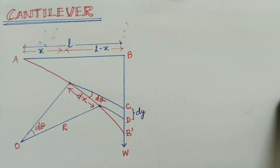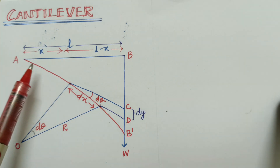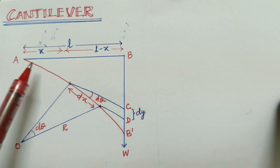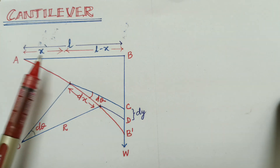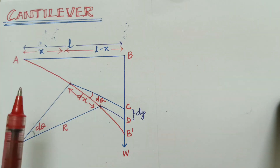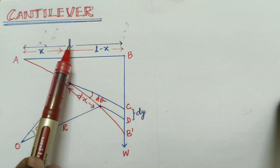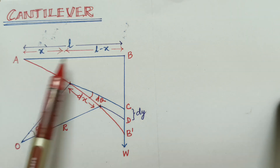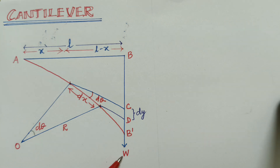Good evening. Today we are discussing about cantilever. What is meant by cantilever? The cantilever is nothing but a beam that is fixed at one end and loaded at the other end. Consider a beam of length L, and the other end is loaded by the weight W.